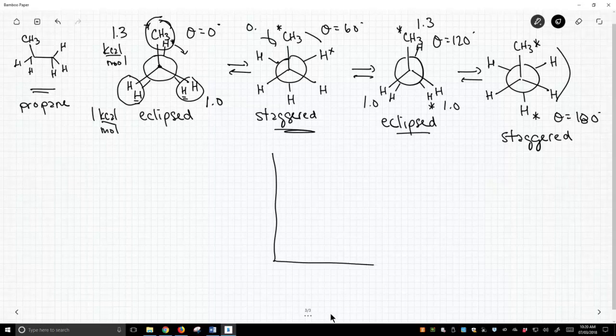So when we draw this up, put in our energy axis, and we have theta. So this is kcals per mole. 0, 60, 120, 180. Now the peak energy, instead of being 3.0 kcals per mole, it's going to be 3.3 in the case of propane, unlike 3.0 as it was with ethane.